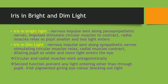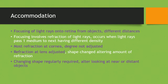In dim light the opposite occurs — a nervous impulse is sent along sympathetic nerves, stimulating the circular muscles to relax and the radial muscles to contract, which dilates the pupil making it wider so more light enters. The circular and radial muscles work antagonistically. A second function of the iris is to prevent any light entering other than through the pupil, as the iris is pigmented, giving the eye its colour and blocking out light.